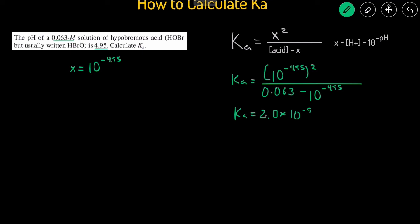And that's how you can quickly solve for the Ka of an acid, with Ka equals x squared divided by the concentration of acid minus x, where x is equal to the H+, which is equal to 10 raised to the negative pH.